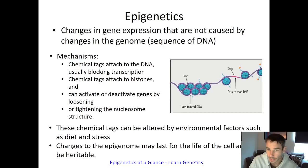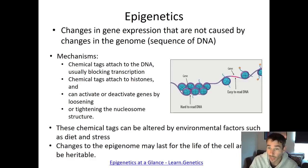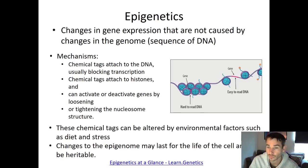In this diagram, we're looking at a gene — the pinkish region. It can either be easy to read, meaning it's loose, or hard to read because it's wrapped up tightly. Epigenetics can turn off a gene by keeping it tight or turn on a gene by loosening it. The chemical tags — the little yellow or orange hexagons — bind to the histones (the blue proteins) and loosen things up so the gene is revealed and can be used to make a protein. When the tags are absent, the DNA stays tightly wrapped and the gene is inaccessible.